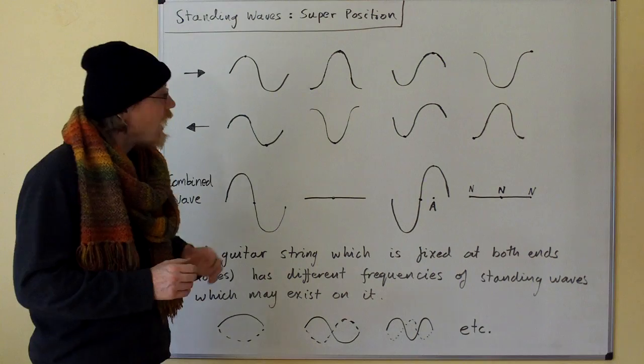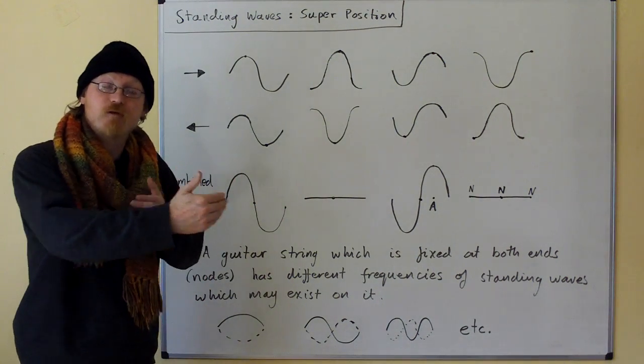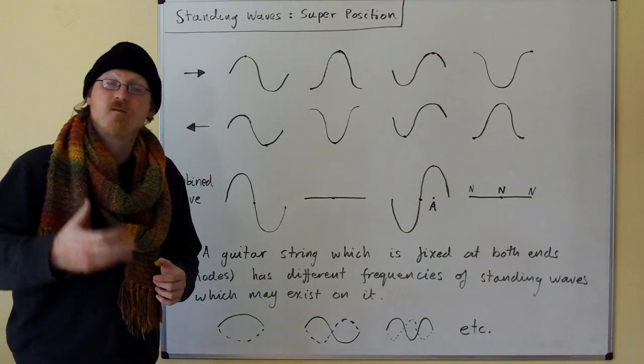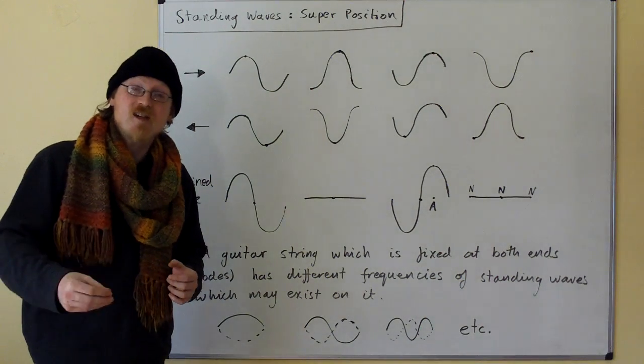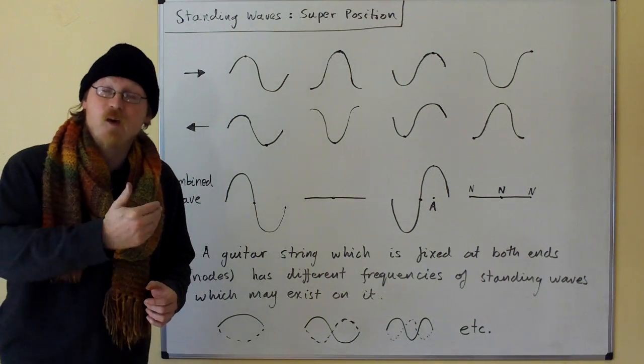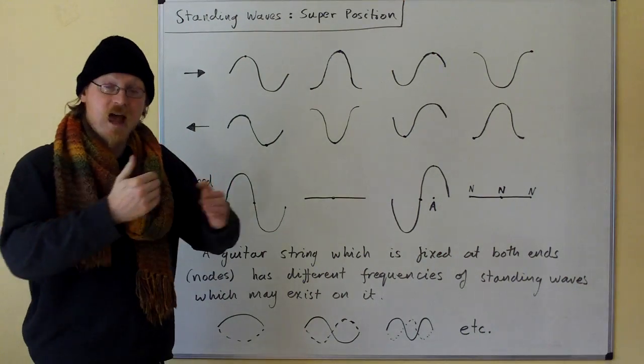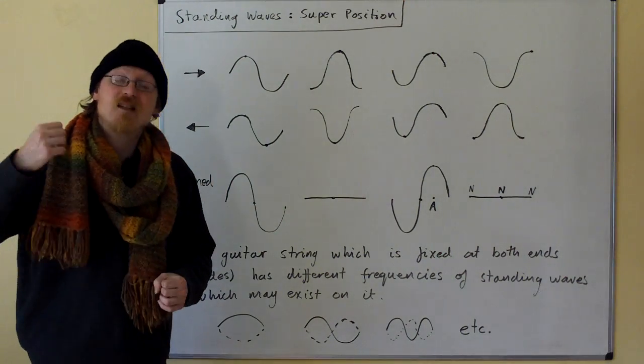Whenever you have waves of the same frequency crossing backwards and forwards over each other, you can set up a standing wave. How common is it to have traveling waves of the same frequency crossing backwards and forwards over each other? Well, it's very common.